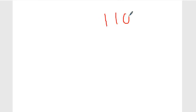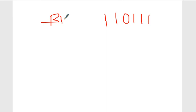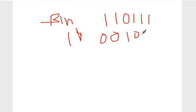Let's take one more example. Suppose the binary number is 1111. You have to find the one's complement. One is written as zero, one is written as zero, one is written as zero, one is written as zero. So the one's complement of 1111 is 0000.